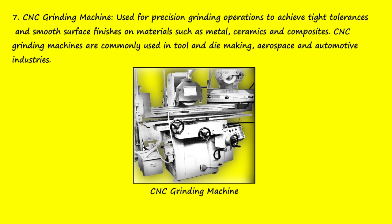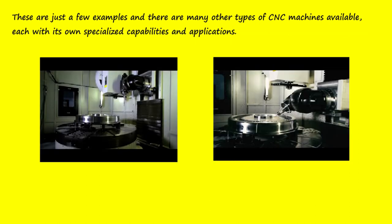7. CNC Grinding Machine — used for precision grinding operations to achieve tight tolerances and smooth surface finishes on materials such as metal, ceramics, and composites. CNC grinding machines are commonly used in tool and die making, aerospace, and automotive industries.